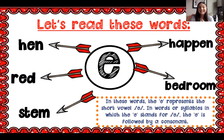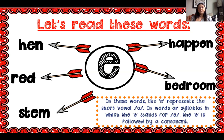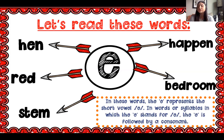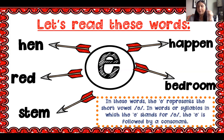Let's read some words together with the short E sound. Hen — remember the chaining strategy from kindergarten and first grade, I can get my arm out. Red. Stem — I'll get out my four fingers: S-T-E-M. On the other side I have multi-syllable words — we can chunk them up. I see 'hap' and 'pen' — put those together and I get 'happen.' Same strategy: 'bed' and 'room' — bedroom. Chunky monkey helps us take longer words and chunk them into parts.